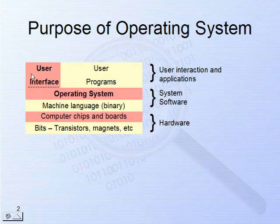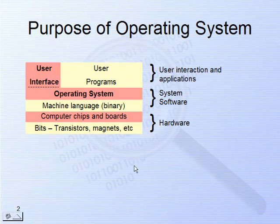The operating system is software that comes with your computer to control the hardware and provide a user interface for you to interact with the computer. Things like deleting files and moving files around is you using the operating system's user interface. Also, you use computer programs — programs like Microsoft Word and games — which work with the operating system to interact with the hardware.